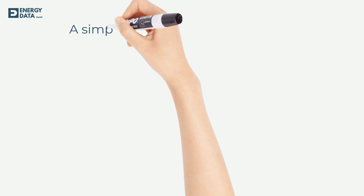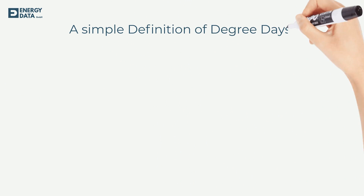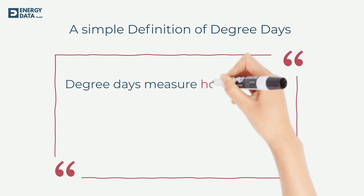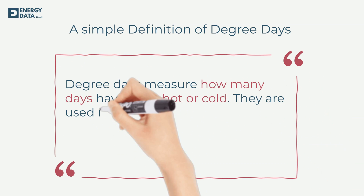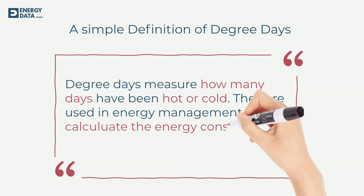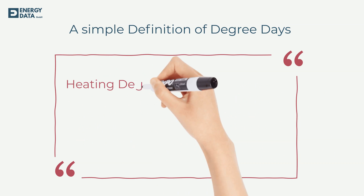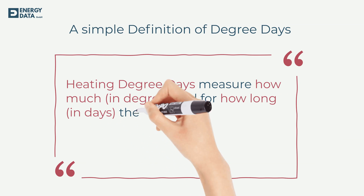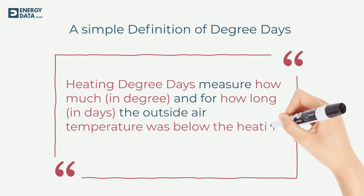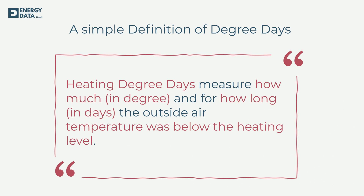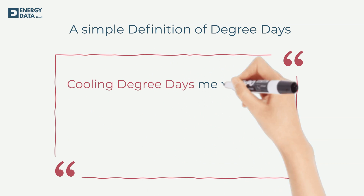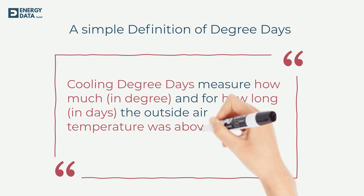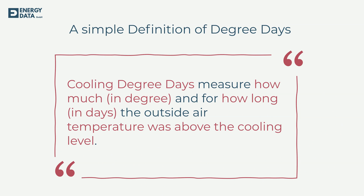Let's start with a simple definition of degree days. Degree days measure how many days have been hot or cold, and they are used in energy management to calculate the energy consumption of a building. Heating degree days measure how much in degrees and for how long in days the outside air temperature is below the heating level. Cooling degree days, on the other hand, measure how much and for how long the outside air temperature was above the cooling level.